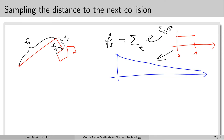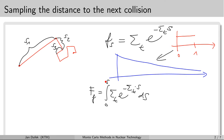We can use the inverse-transform method when we can obtain the cumulative distribution function for our random variable in some convenient form, and that is our case. The cumulative distribution function is the integral from 0 to s of the probability density function: sigma_T times the exponential function. We have actually calculated this integral before. The result is 1 minus the exponential function with exponent minus sigma_T times s.